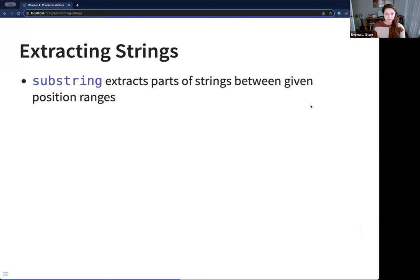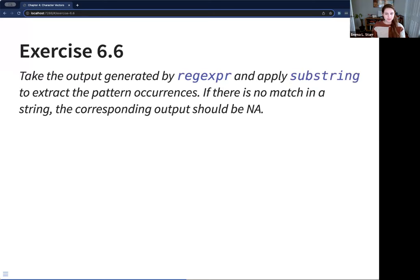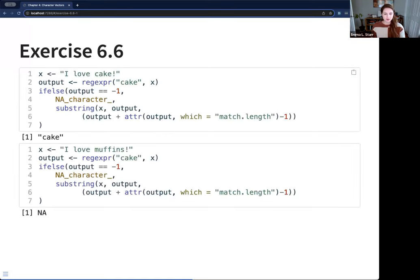So there are some other string operations. You can do substring extracts parts of strings between a given position range. So we can see this being used in exercise 6.6 to extract the pattern occurrences. So here's what I have. I used an if-else to account for the request to put out an NA when there is not a match. But then I just use the attribute of match length and the output to extract the starting positions and the length. And then I realized belatedly, I just fixed this, that I needed to add a negative one or minus one to get the right position.